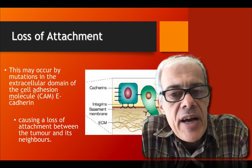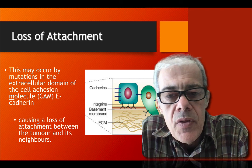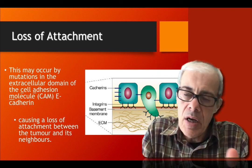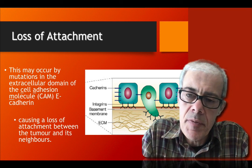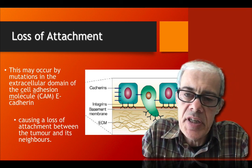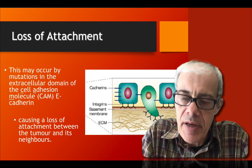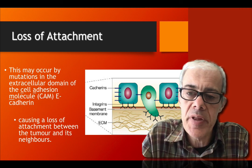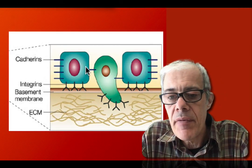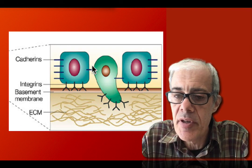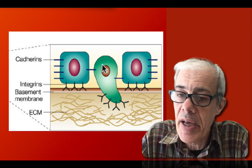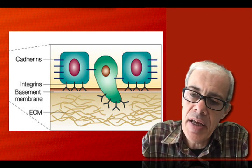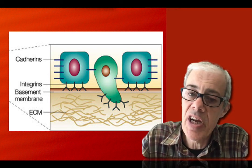As background: cells in our body are in close proximity to each other, and that proximity limits their growth. They are aware of their neighbours and don't grow inadvertently when they come into contact with them. They are also physically attached to their neighbours so they can't physically break away. So neighbouring cells limit each other's growth.